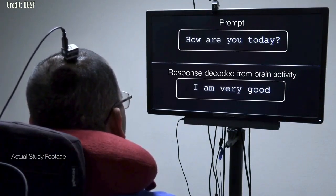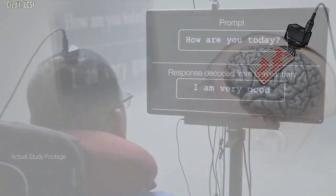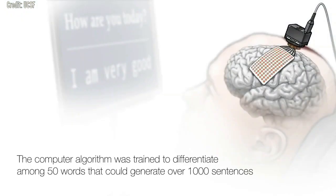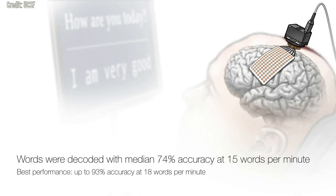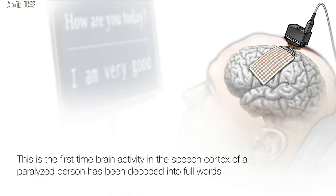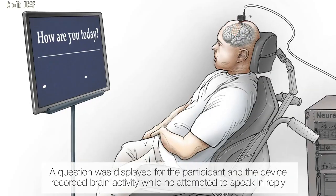To translate the patterns of recorded neural activity into specific intended words, the other two lead authors of the study used custom neural network models, which are forms of artificial intelligence. When the participant attempted to speak, these networks distinguished subtle patterns in brain activity to detect speech attempts and identify which words he was trying to say.